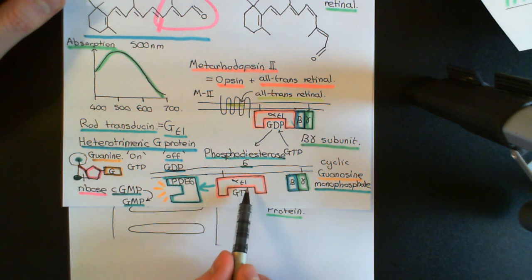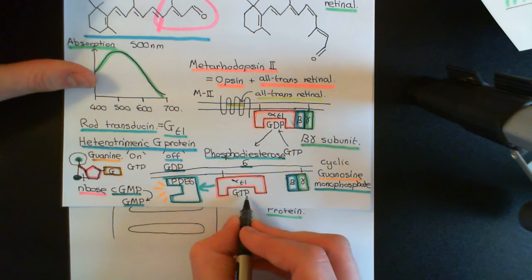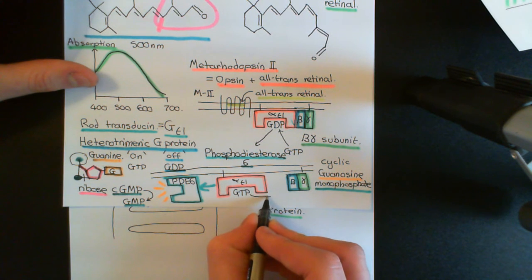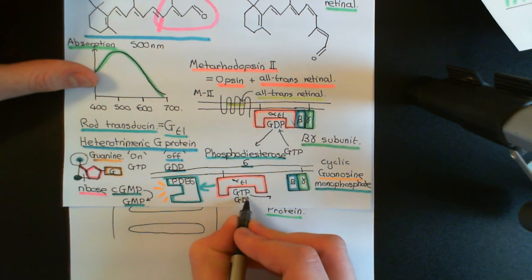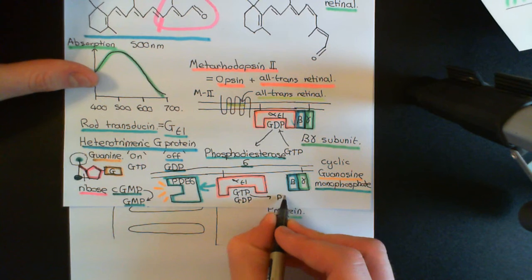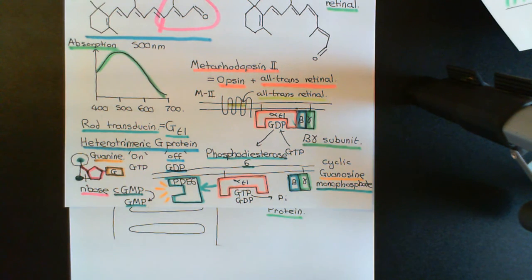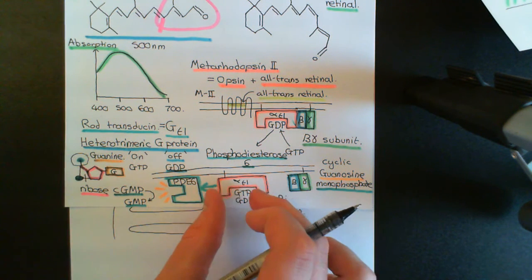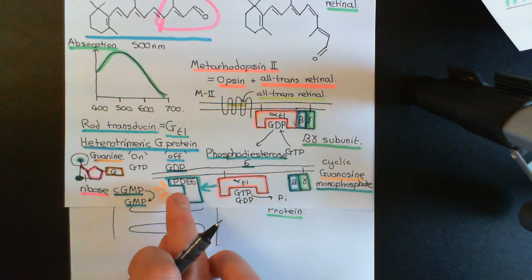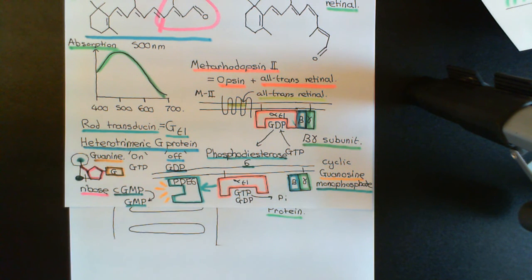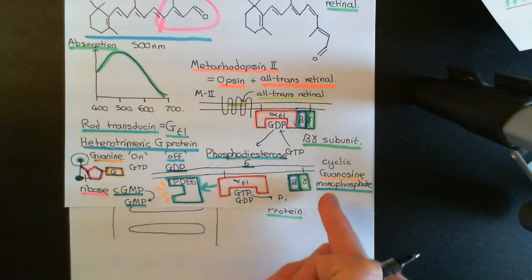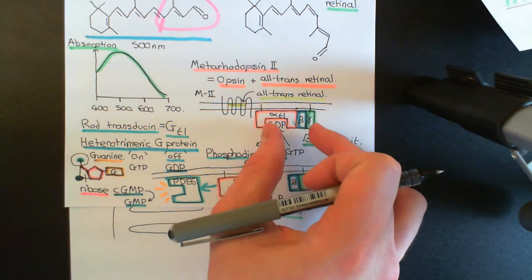However, it's a time bomb effectively — it is working on trying to break this down, and eventually it will break the GTP down into GDP and inorganic phosphate. Inorganic phosphate will be released, the GDP will remain in that binding site, and as soon as it does succeed in breaking that third phosphate group off, it will then return back into the original conformation — the off-conformation. In the off-conformation, it will cleave away from the phosphodiesterase-6, which means that the phosphodiesterase-6 will turn off. And it will then go and find the beta-gamma complex again, bind to it, and return to the off-state.